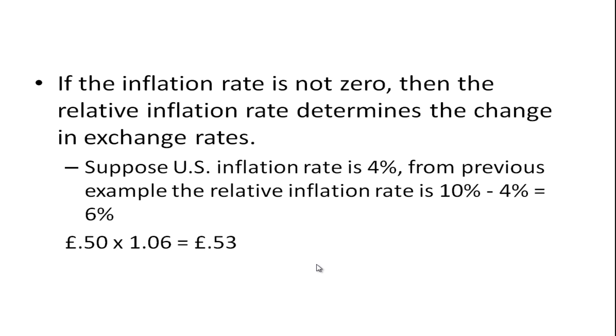Suppose the US inflation rate is 4% and the inflation rate in Britain is 10%. Then the relative inflation rate is 10% minus 4% or 6%. In this case it's that spot exchange rate £0.50 times 1.06, so the exchange rate is £0.53 per US dollar.